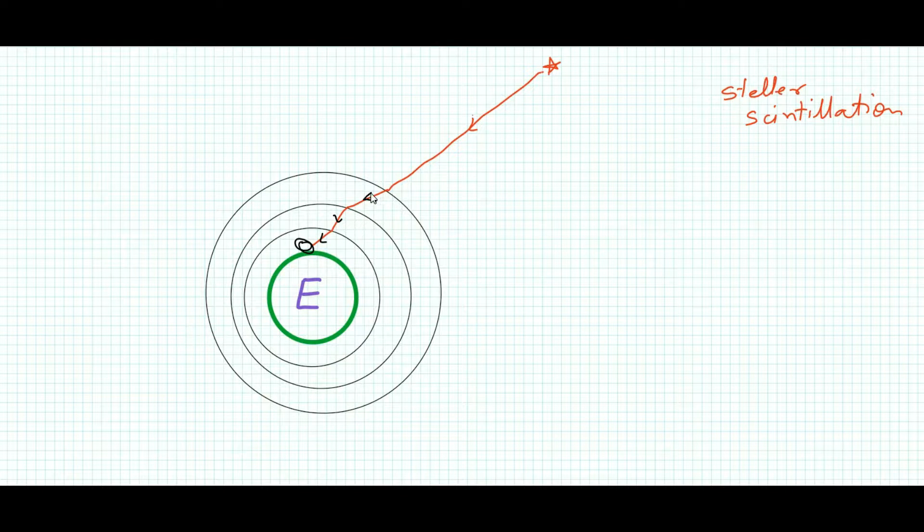For example, I have shown here only three layers, but actually it is composed of many layers and the ray of light is refracted many times and in random directions. This random refraction causes the star to appear as if it's moving from one place to another place. Actually the star doesn't move; the image of the star looks or seems to be moving from one position to another position, and it seems like the star is twinkling.